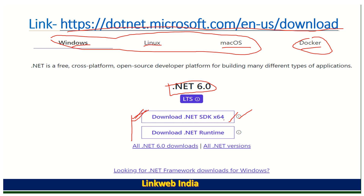There are two options on the download page: Download .NET SDK and Download .NET Runtime. The major difference is that .NET SDK is a software development kit — when you install it, you can develop, build, and deploy the application.